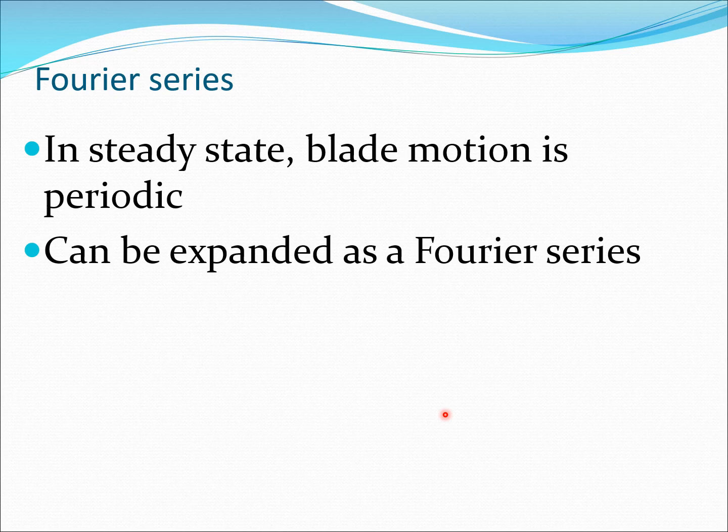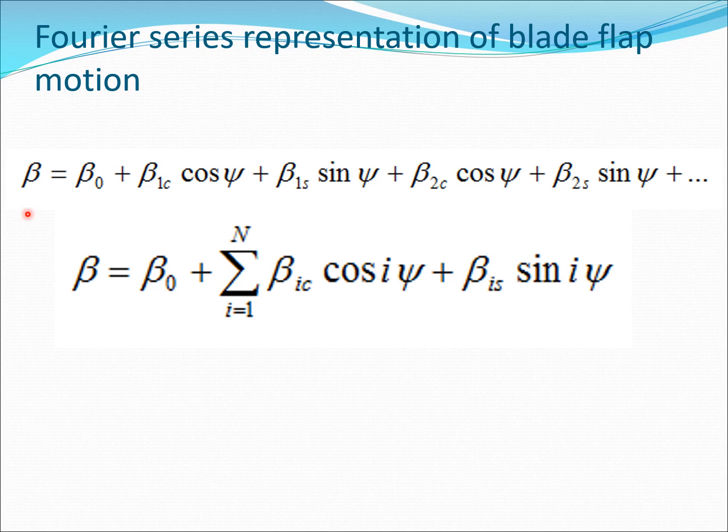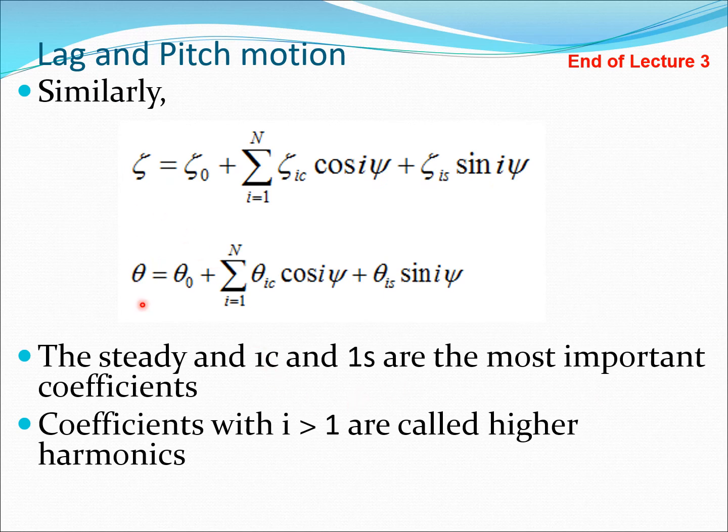The interesting thing is that if we are considering steady state motion, the blade motion is going to be periodic. One important conclusion in helicopter dynamics is that this periodic motion could be expanded in a Fourier series. If you are dealing with periodic functions, they are very suitable for Fourier series expansion. Let us look at the flap motion, which is the simplest and most important type. You could expand the flap motion with a steady component, a cosine psi and sine psi component called the first harmonics, a cos 2 psi and sine 2 psi component called the second harmonics, and so on. If I were to write this in a more compact summation form, I would get a Fourier series representation of beta. Similarly, we could do this for zeta and theta.